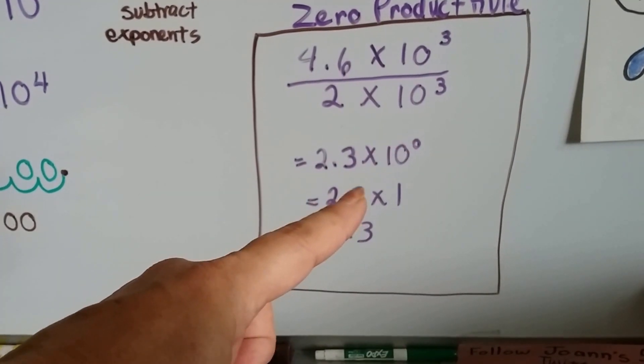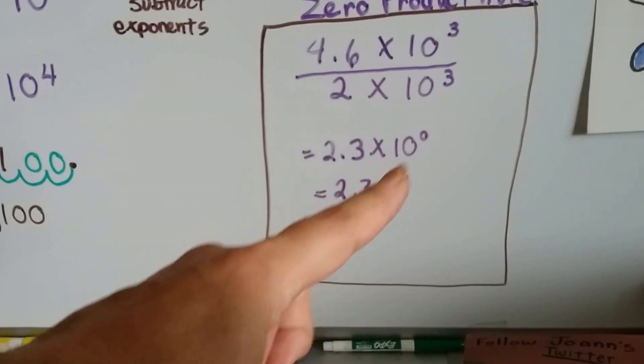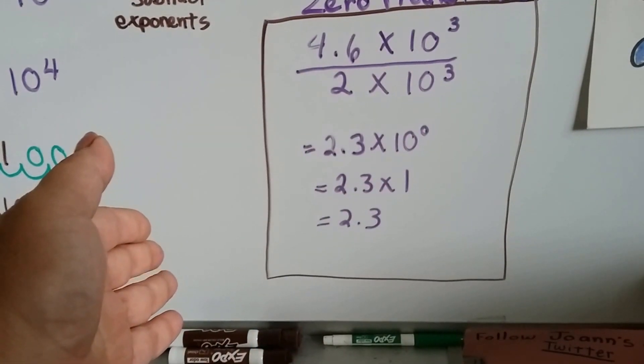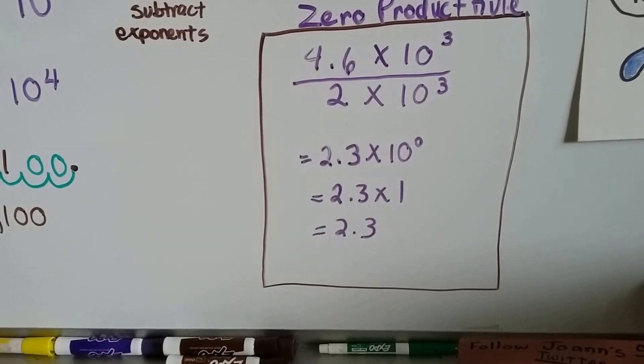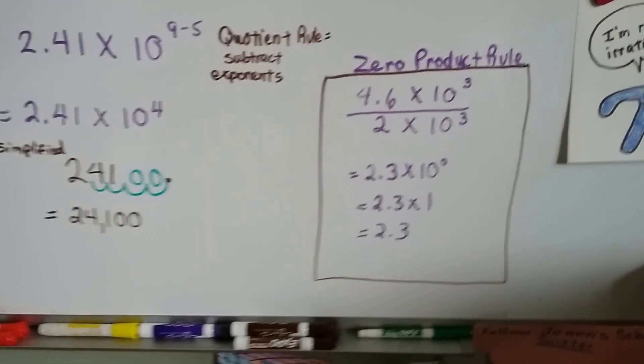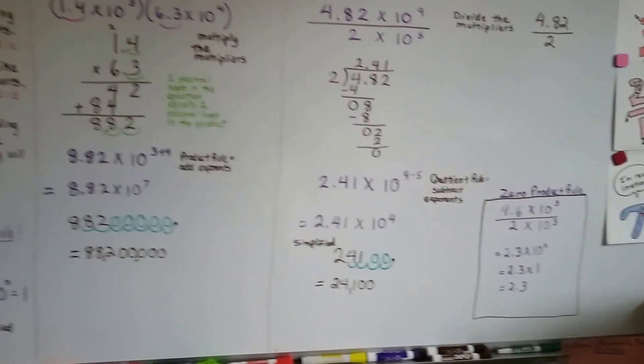So, we'd have 2.3 times 10 to the 0 power, which the 10 to the 0 power is a 1. Remember, any number with a zero exponent is a 1. That means, simplified, our answer would be 2.3. So, just be careful when the exponent becomes a 0. Don't flip out. It's no big deal. It just means a 1.